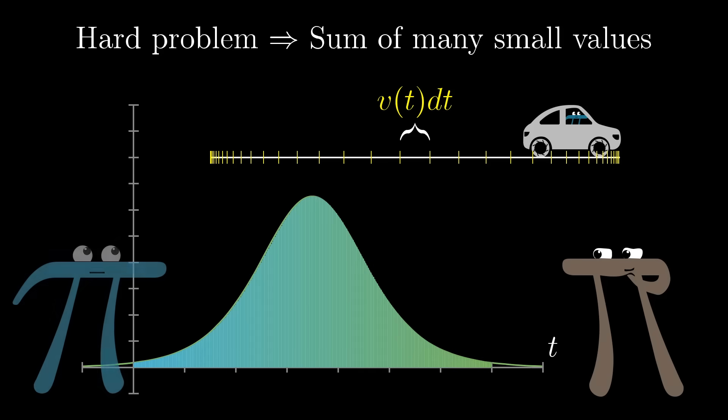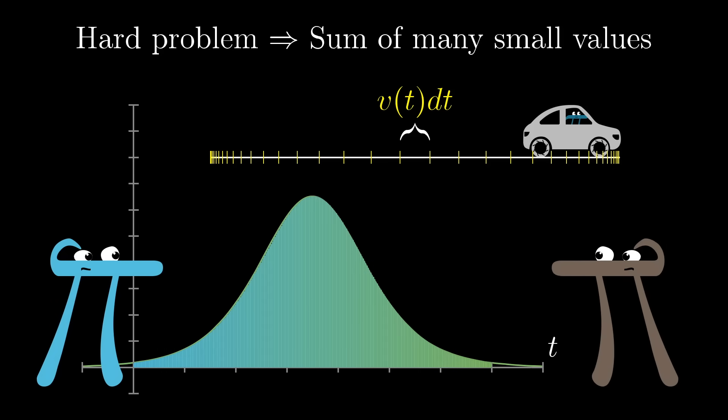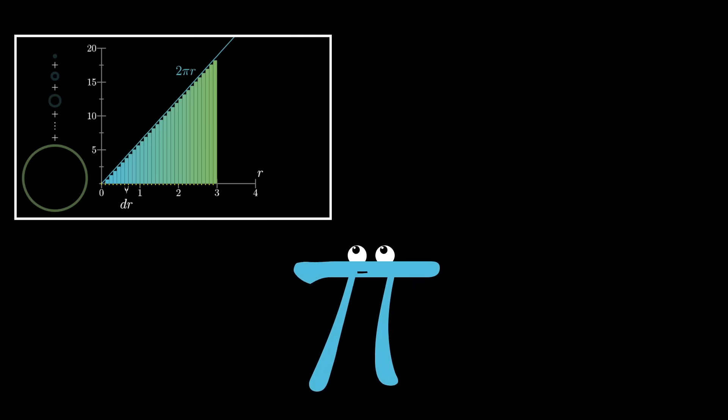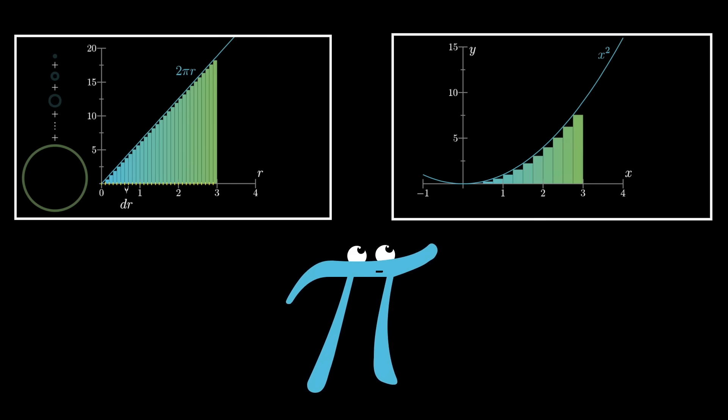If finer and finer approximations of the original problem correspond to thinner and thinner rings, then the original problem is equivalent to finding the area under some graph. Again, this is an idea we'll see in more detail later in the series, so don't worry if it's not 100% clear right now. The point now is that you, as the mathematician having just solved a problem by reframing it as the area under a graph, might start thinking about how to find the areas under other graphs.